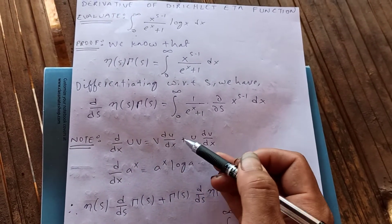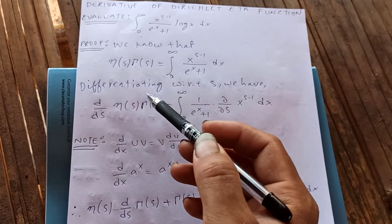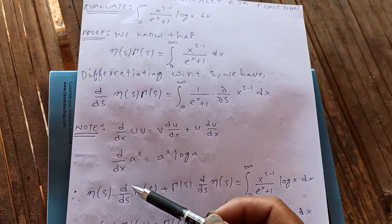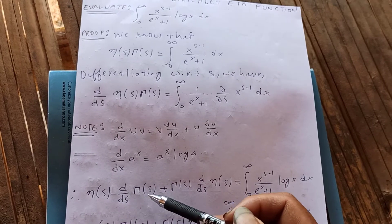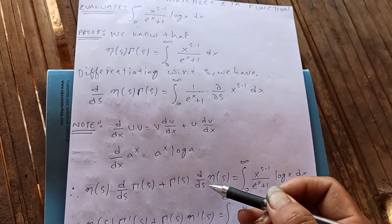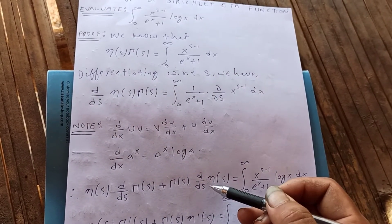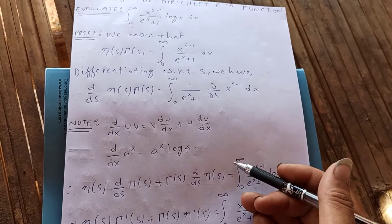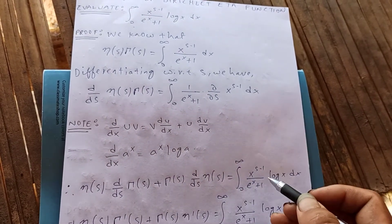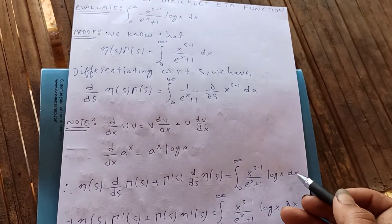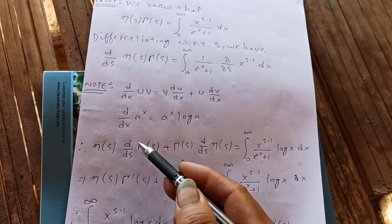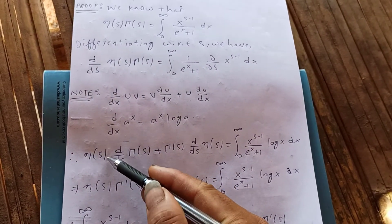Following the product rule on the left-hand side, we get η(s) times the derivative of Γ(s) with respect to s, plus Γ(s) times the derivative of η(s) with respect to s. The right-hand side gives us the integral from zero to infinity of x to the s minus 1 upon e to the x plus 1 times log x dx — which is exactly what we are trying to evaluate.